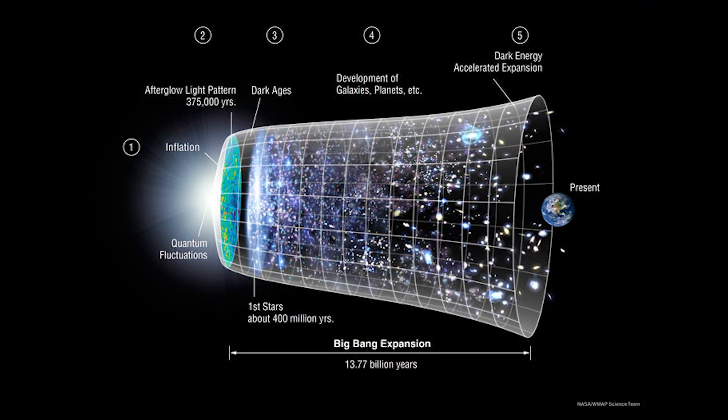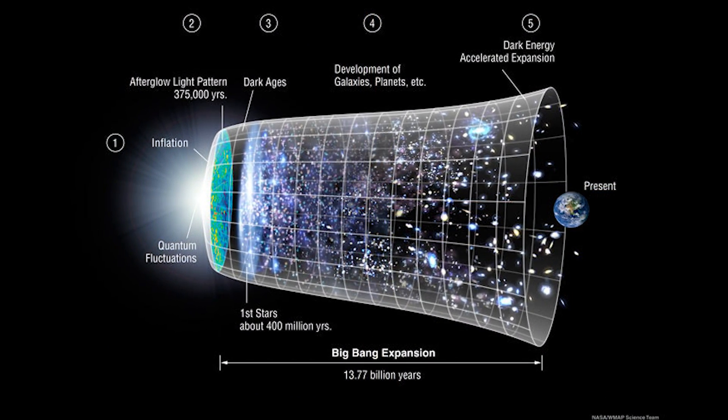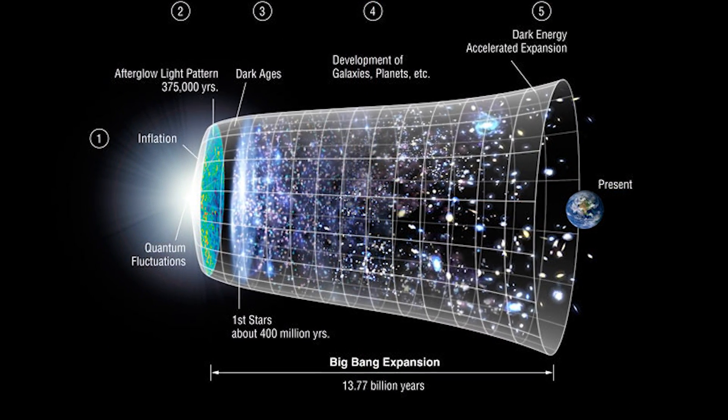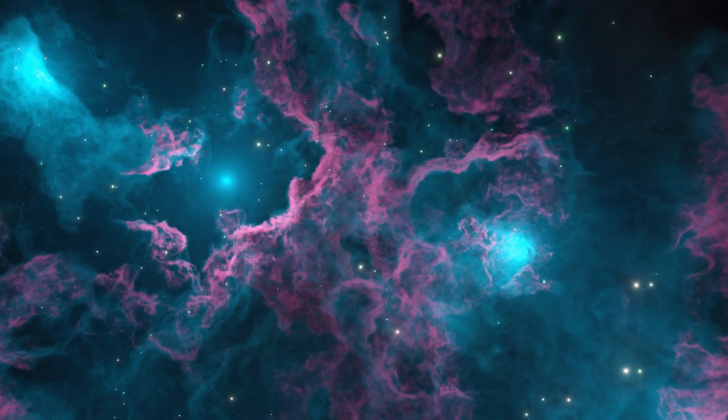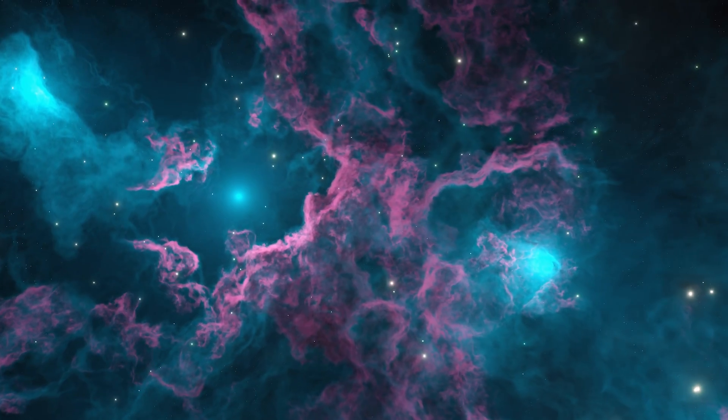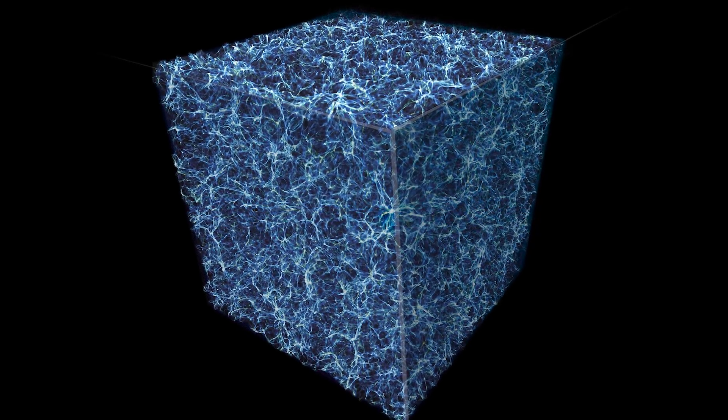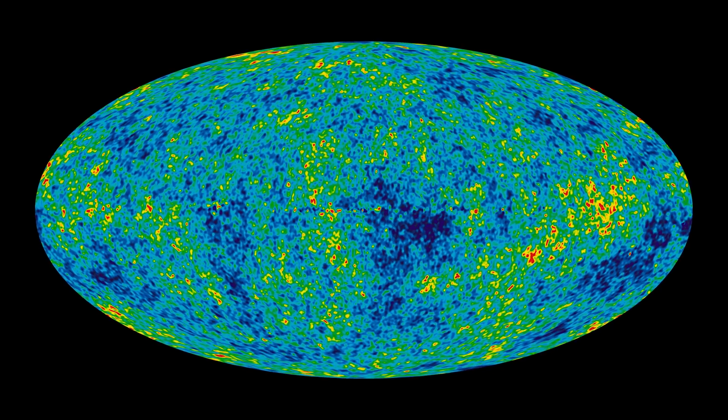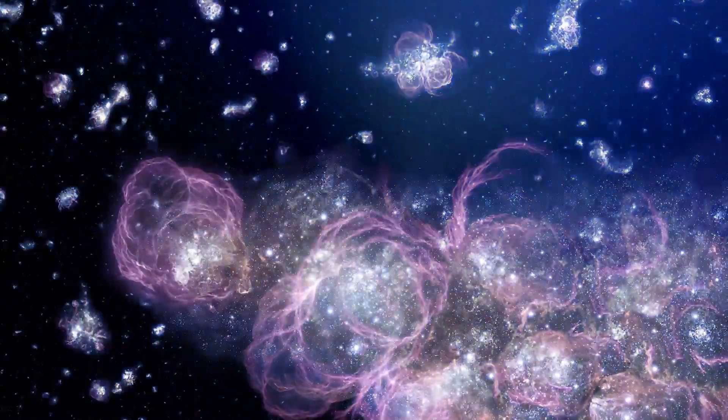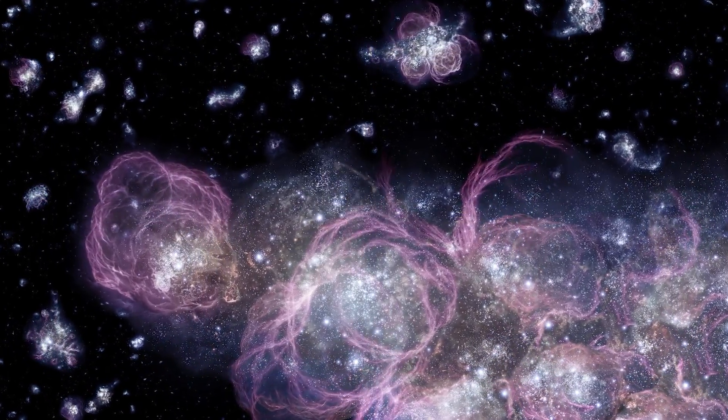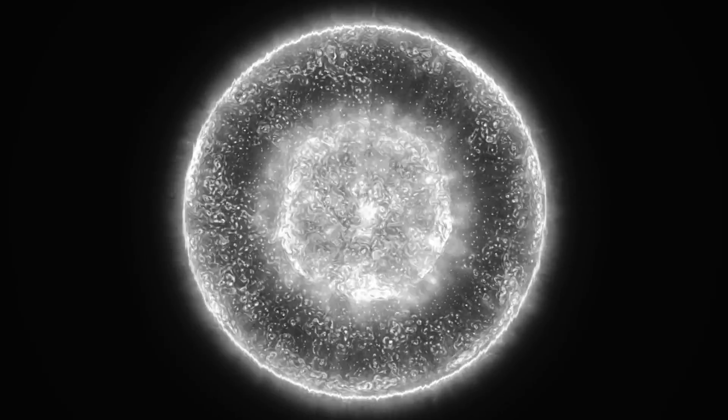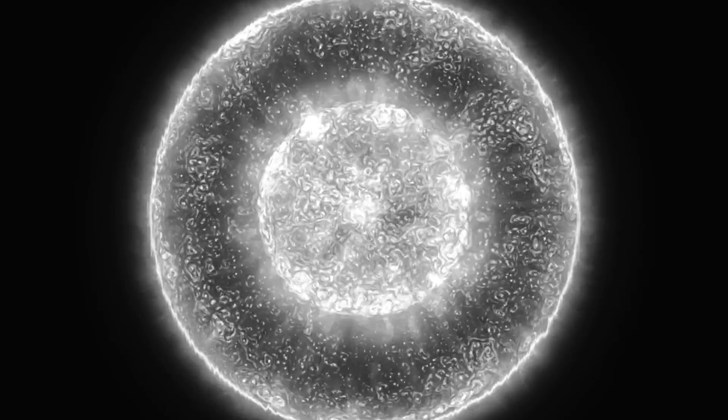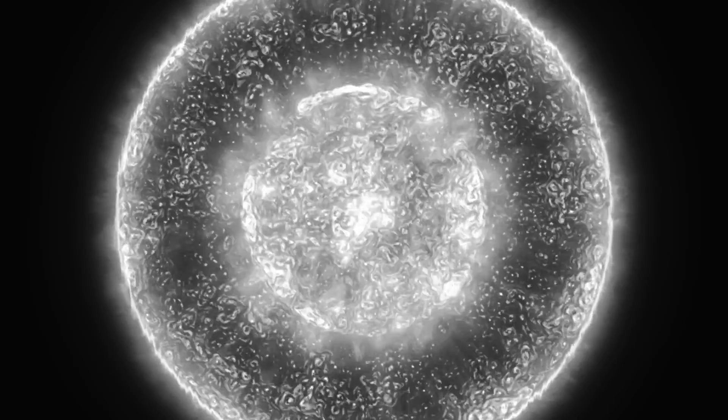The Lambda Cold Dark Matter Model, a cornerstone of modern cosmology, successfully accounts for a wide range of astronomical phenomena, from the large-scale structure of the universe to the cosmic microwave background. However, this model rests on the assumption that dark energy is a constant, unchanging component, a cosmological constant.